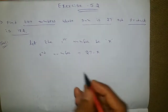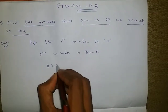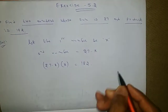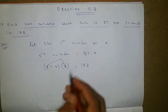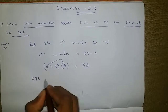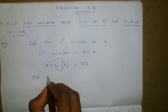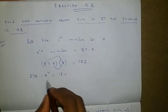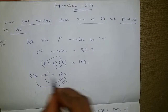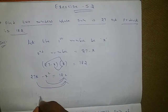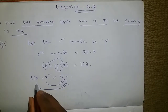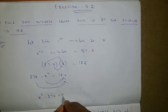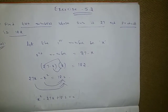The product of those two numbers is 182, so second number into first number equals 182: 27 minus x times x equals 182, giving 27x minus x squared equals 182. Bringing everything to the right side: x squared minus 27x plus 182 equals 0.